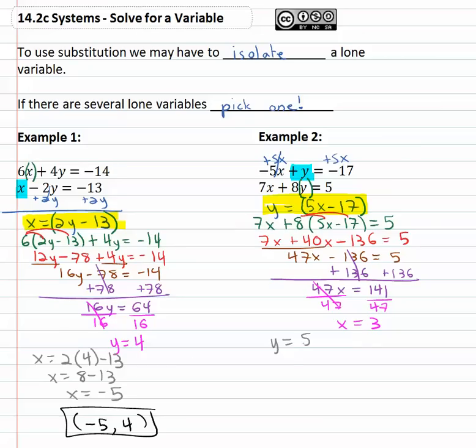Y is equal to five x, x is three minus seventeen. Five times three is fifteen, so y is equal to fifteen minus seventeen or y is equal to negative two.